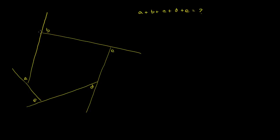Now this looks like an interesting problem. We have this polygon — it looks like a pentagon right over here. It has five sides. It's an irregular pentagon; not all the sides look to be the same length. The sides are kind of continued on, and we have these particular exterior angles of this pentagon. What we're asked is: what is the sum of all of these exterior angles? It's kind of daunting because they don't give us any other information or any particular angles. So what we can do is think about this step by step based on what we do know.